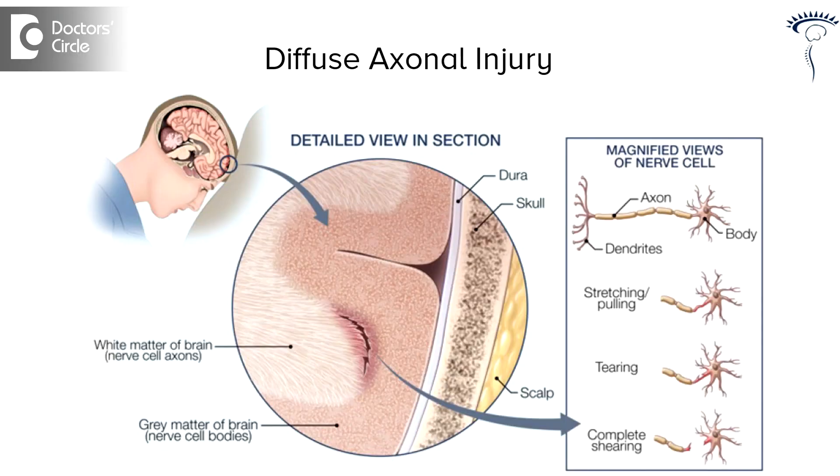The fifth one is diffuse axonal injury. Here, we may not see any damage to the brain in the CT scan. But if you go for MRI scan, we can see the injury to the axons. The outcome again depends on the severity of the damage. In case of severe axonal injury, the outcome is very bad.